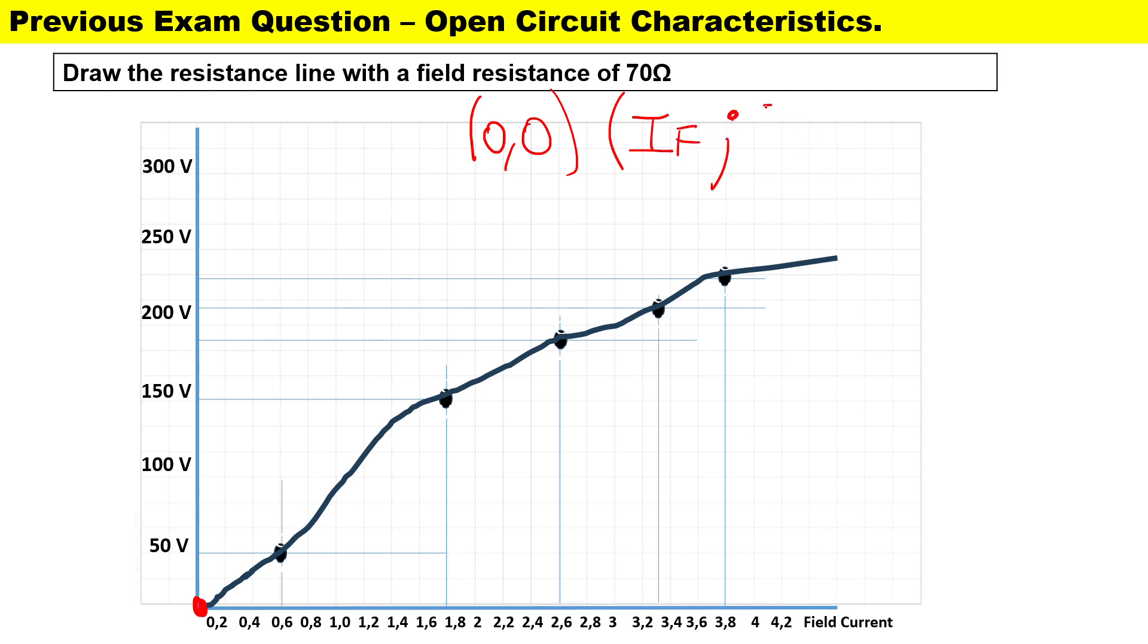For our second plot we're going to be using our field current IF, and in order to calculate the second plot it'll be IF multiplied by the field resistance RF. I'm going to choose a whole number, so I'll substitute my field current there of 3 amps, and to calculate the second plot it'll be 3 times 70 which is the field resistance. 3 times 70 will give us 210.